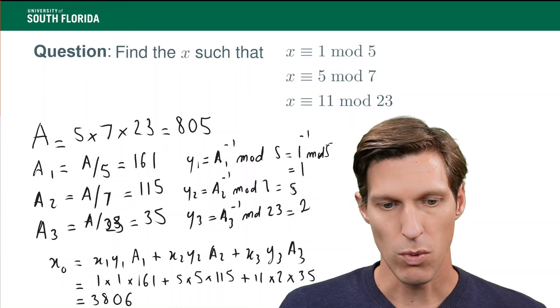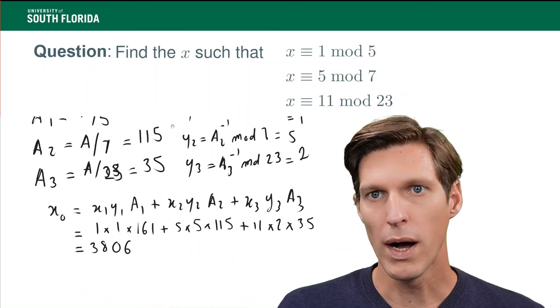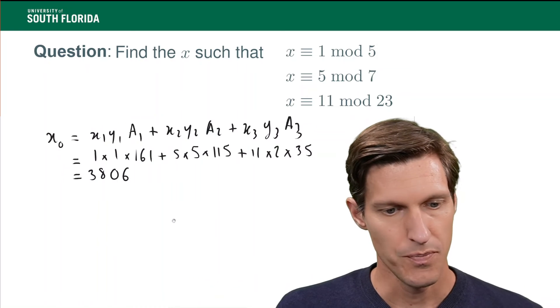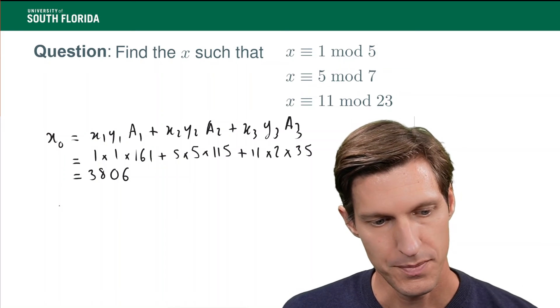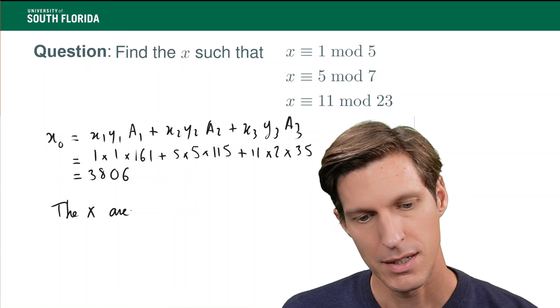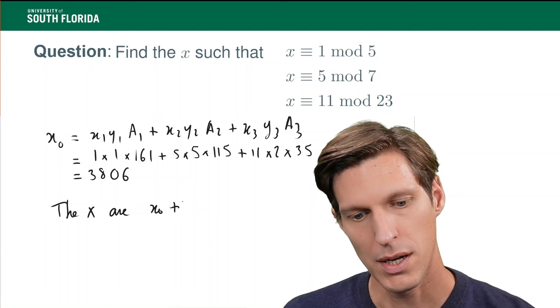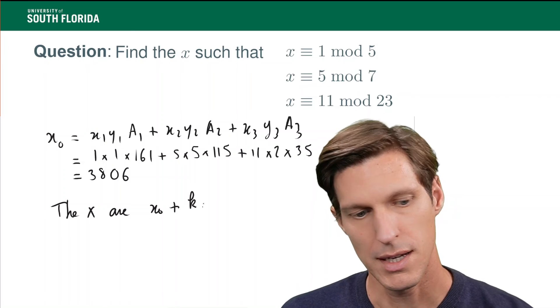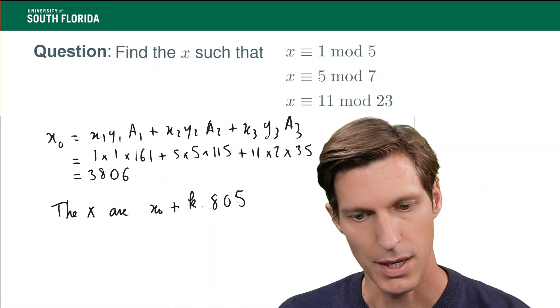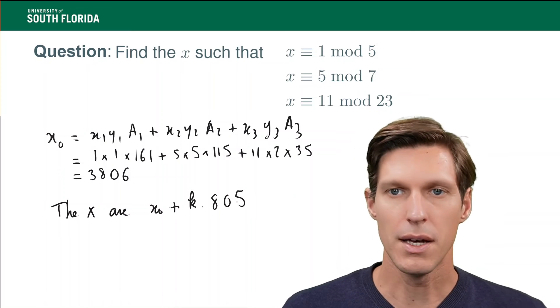So, what do we learn here? We learn one particular x that satisfies our congruence relation. Now, all the x's are x0 plus k times 805 for all k in integer.